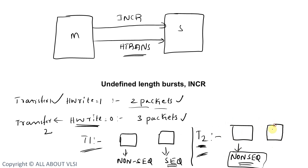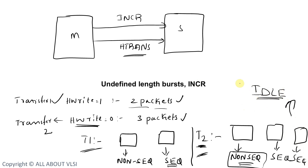From the second packet of Transfer 2 the master sets HTRANS to sequential, then sequential again. After the last packet is sent, the master may go to idle state or change to non-sequential for a new transaction. If it goes idle, the slave knows Transfer 2 has completed. If it goes non-sequential, the slave also knows Transfer 2 has completed and a new transfer is starting. This is how the slave judges whether a transfer is complete or ongoing by sampling the HTRANS transfer type.